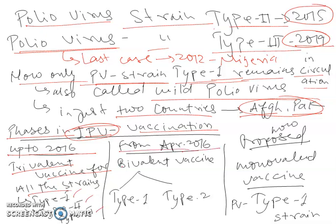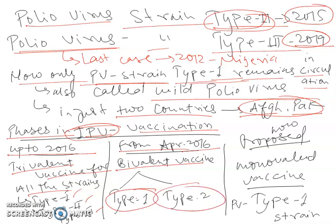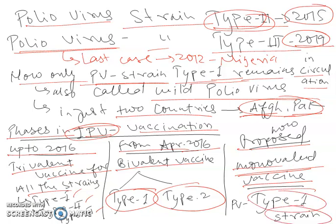Since April 2016, when type 2 virus was declared eradicated in 2015, a bivalent vaccine came into force containing only type 1 and type 3 strains of poliovirus. Now, as most countries have had all three strains declared eradicated, it is proposed that only a monovalent vaccine should be in circulation, in very restricted use, since only two countries still have poliovirus strain type 1 circulating.